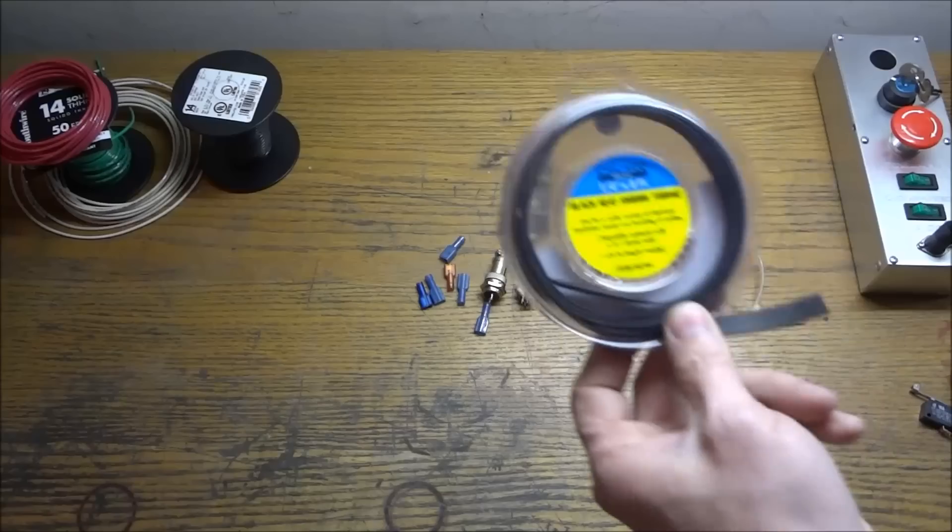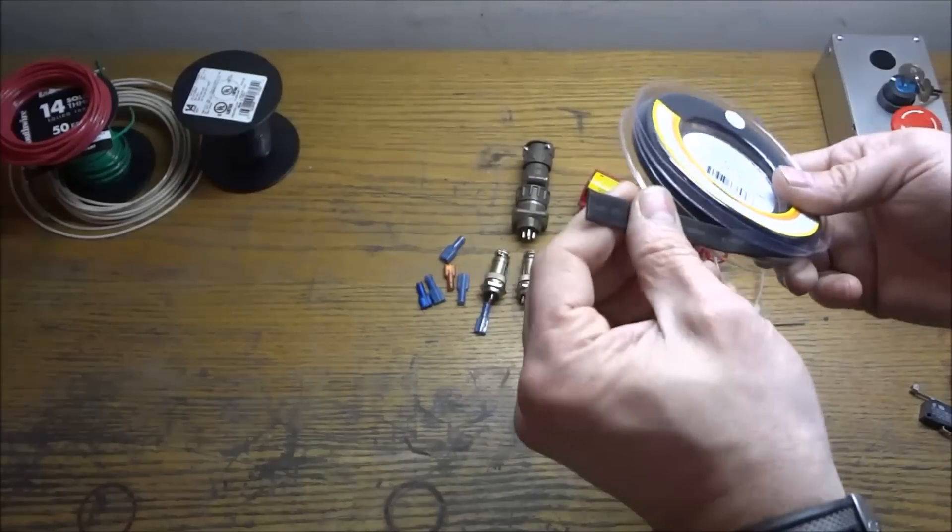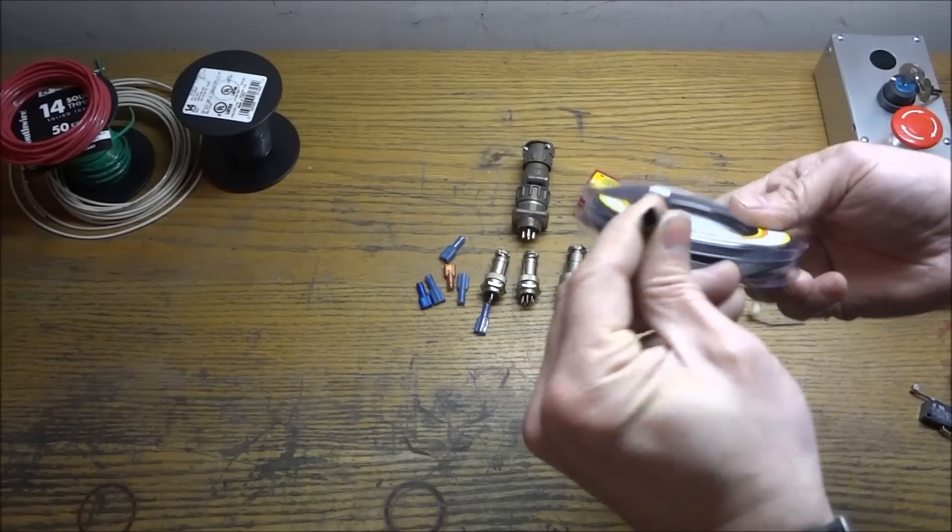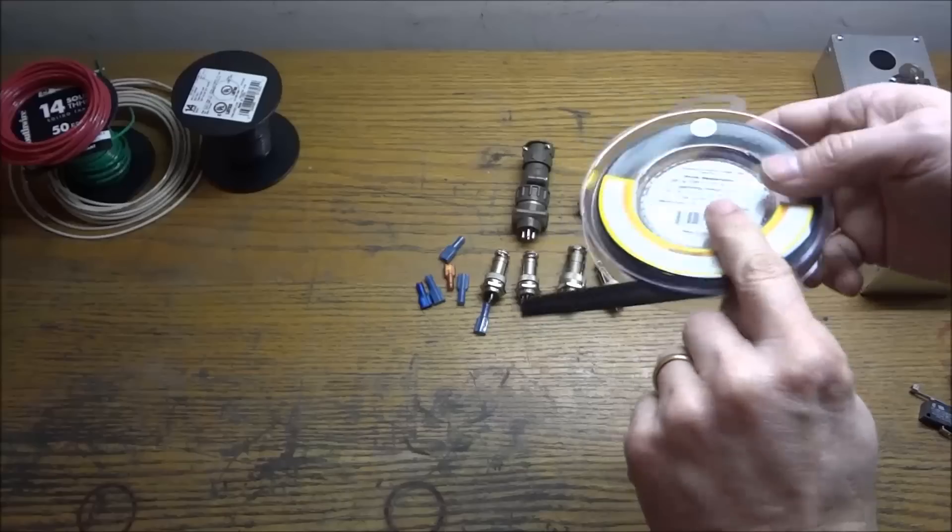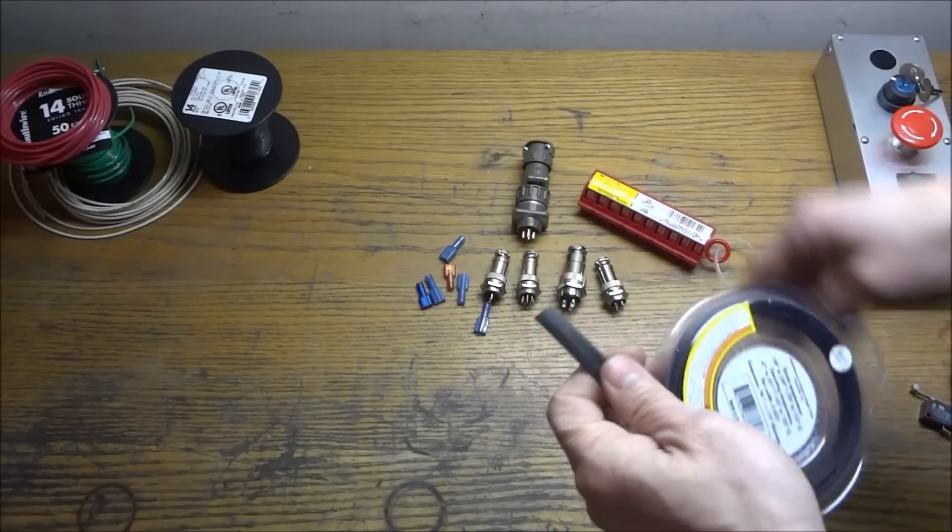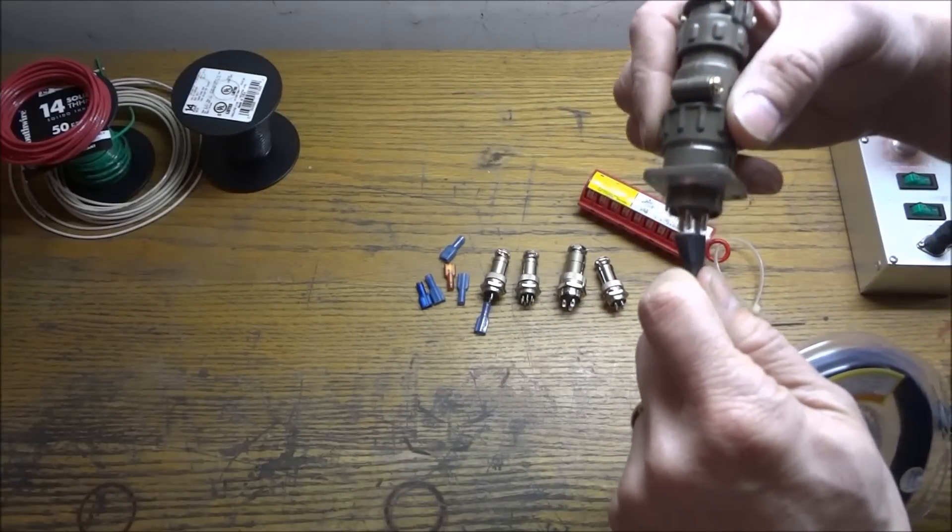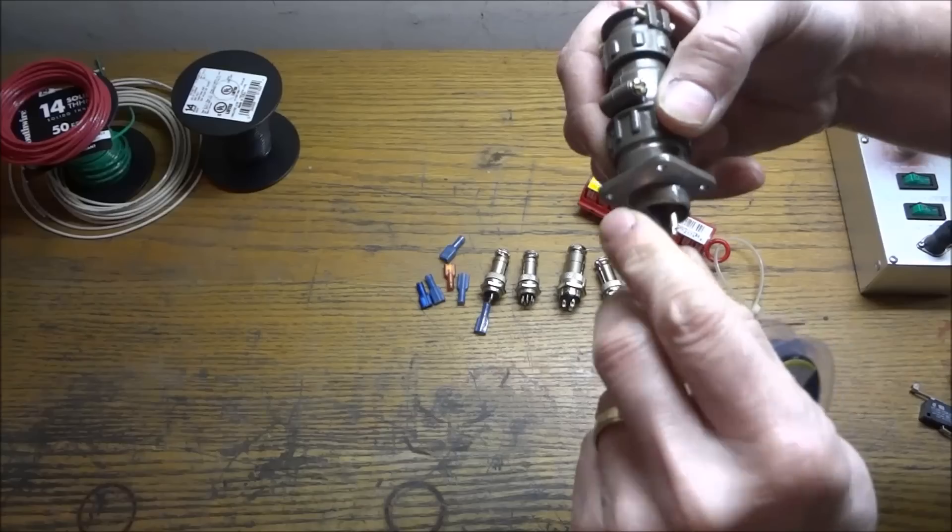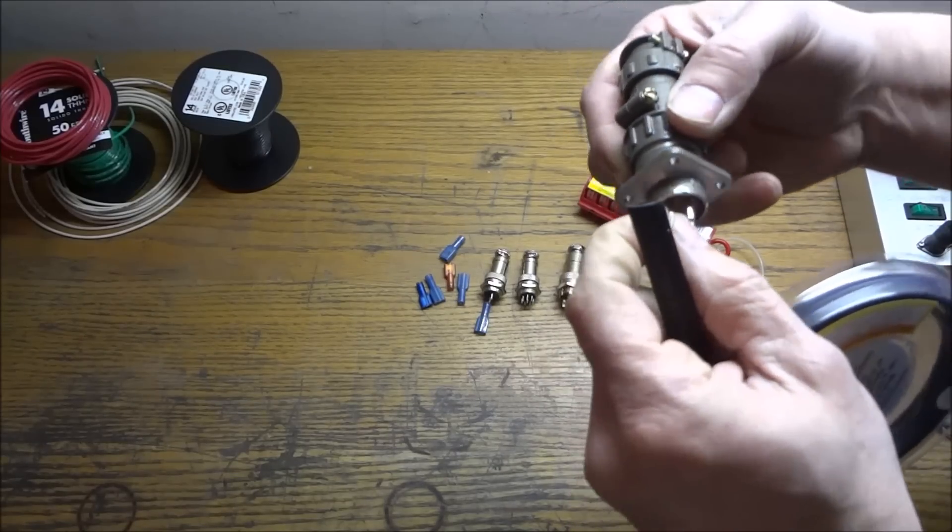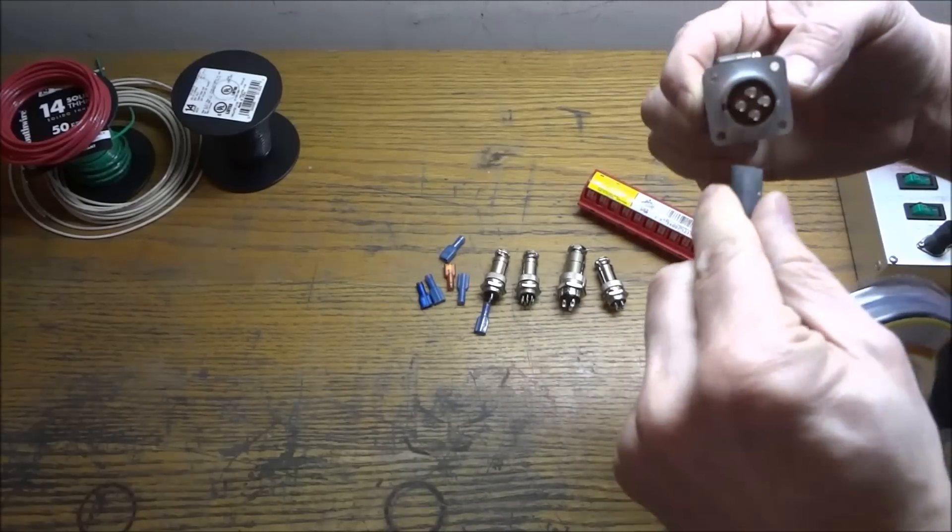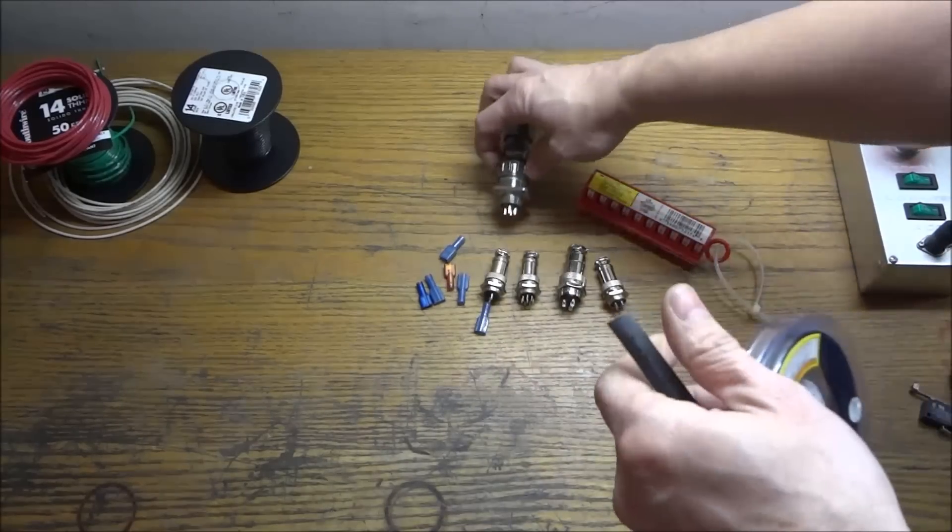I got this, I think, at Harbor Freight. This is quarter inch heat shrink. Pick up two or three different sizes. It's good to put some heat, some small heat shrink around here. We're going to solder all these pins. And then if you put some heat shrink around there, that'll be great. If you can get some small heat shrink.